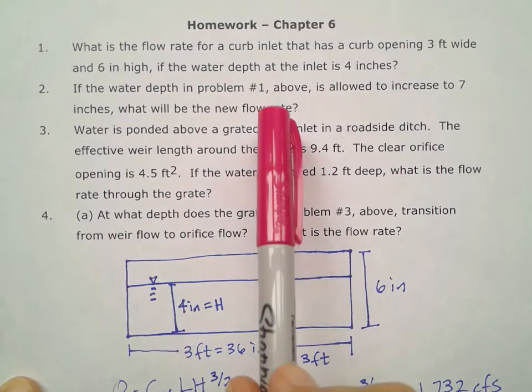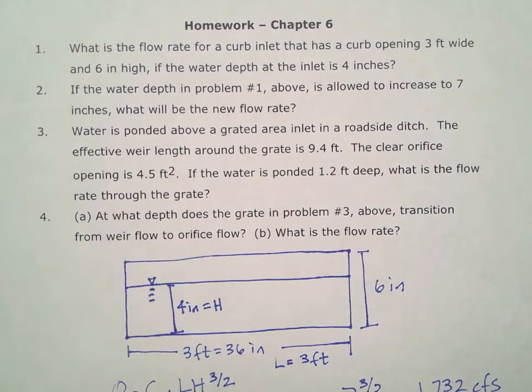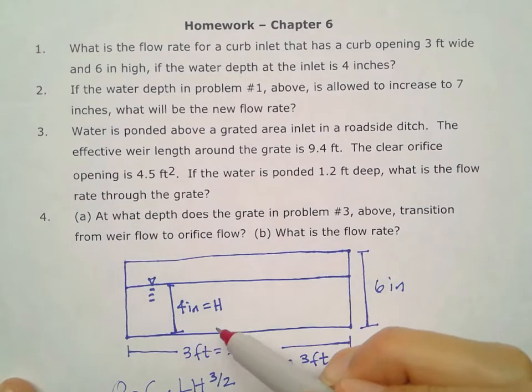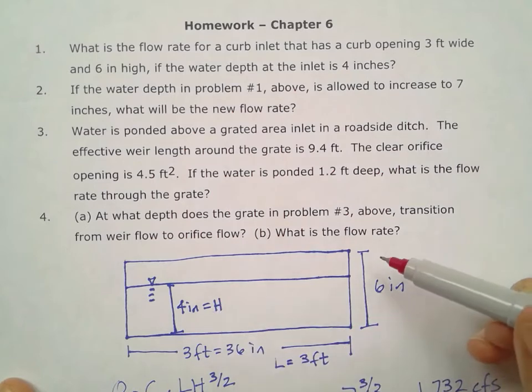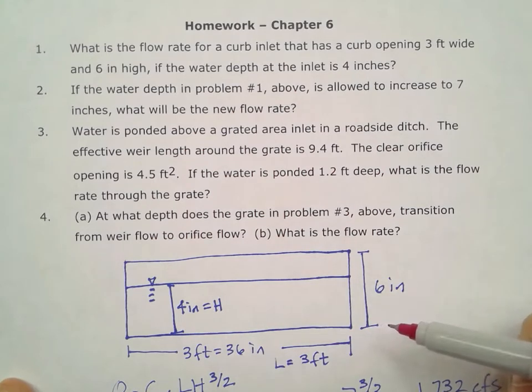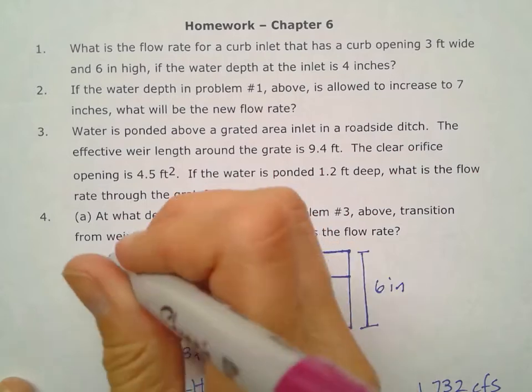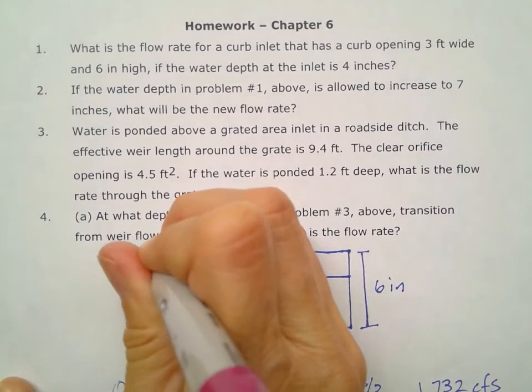But in this case the water is going to be allowed to increase to seven inches, so we want to know what the new flow rate will be. Remember before we had four inches which was less than the six inches of the opening itself. Well now this water is going to rise an inch above the top here to be at this height of seven inches.